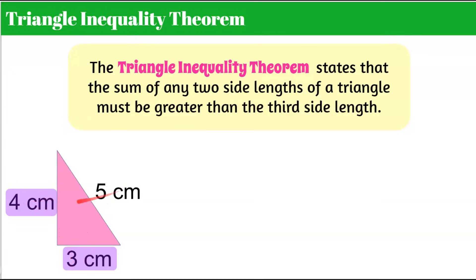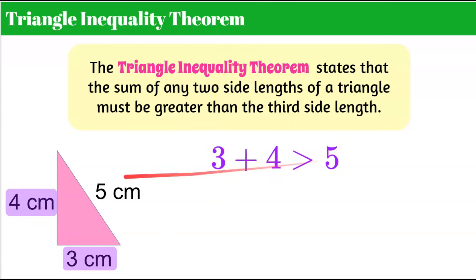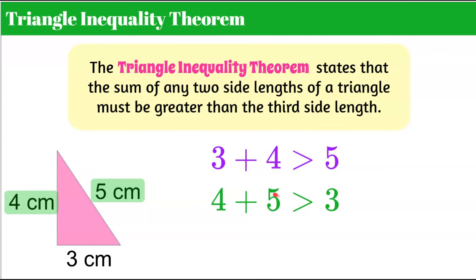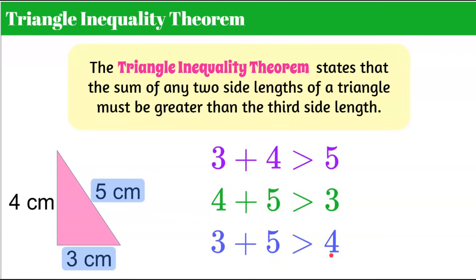We're going to pick these two as our first pair: three plus four has to be greater than that third side — three plus four is seven, and seven is greater than five. Now let's check four and five: four plus five is nine, and that is greater than three, so we have a second check. Now we check three and five: three plus five is eight, and eight is greater than four. So it checks — this is indeed a triangle.